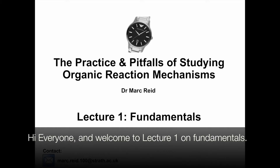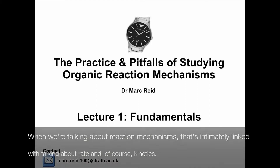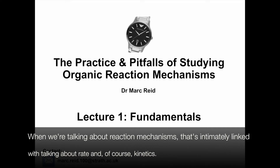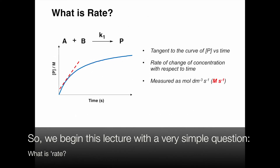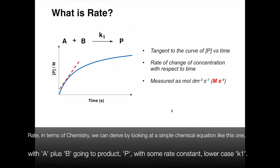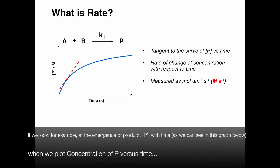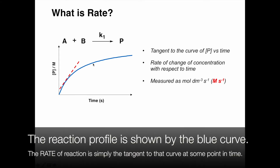Hi everyone and welcome to Lecture 1 on fundamentals. When we're talking about reaction mechanisms, that's intimately linked with talking about rate and kinetics. So we begin with a very simple question: what is rate? In terms of chemistry, we can derive this by looking at a simple chemical equation — A plus B going to product P with some rate constant k1. If we look at the emergence of product P with time, plotting concentration of P versus time, the reaction profile is shown by the blue curve.